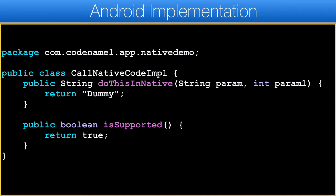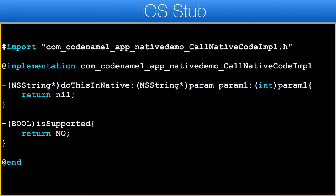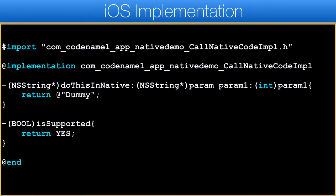Notice that the Java stub and implementation are practically identical, so I'll skip those. For iOS the code looks a bit different, but you will notice the default implementation for isSupported that returns no and the method itself that returns nil. Notice that in Objective-C argument names have meanings, so you can't change the argument names as this will break compatibility. The implementation in iOS for this native code is mostly trivial — we return an NSString, which is the Objective-C native representation of a string, but we seamlessly get a java.lang.String on the Java side.